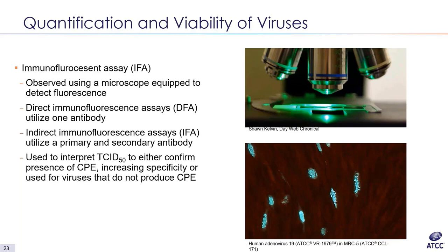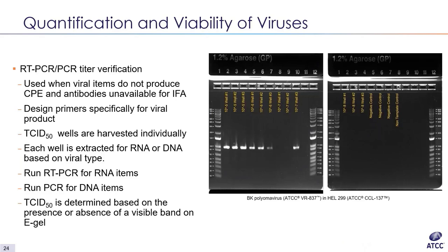Another way to verify TCID50 assays is by using reverse transcriptase PCR for RNA items or PCR for DNA items to determine absence or presence of viral product. This method is used when CPE is not visible and there are no available antibodies for IFA staining. This assay is not as indicative of viral infectivity as the others, as presence of RNA or DNA is not necessarily a representation of the virus infecting itself. The process is labor-intensive, as each well of the TCID50 assay is harvested and extracted separately, then RT-PCR or PCR is performed individually for each well. An example gel for VR-837 shows band intensity decreasing as dilution increases, with a clearly defined endpoint.